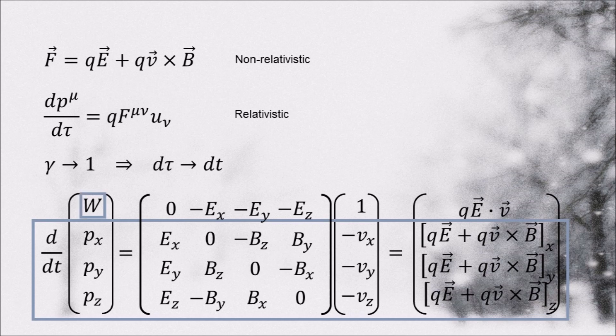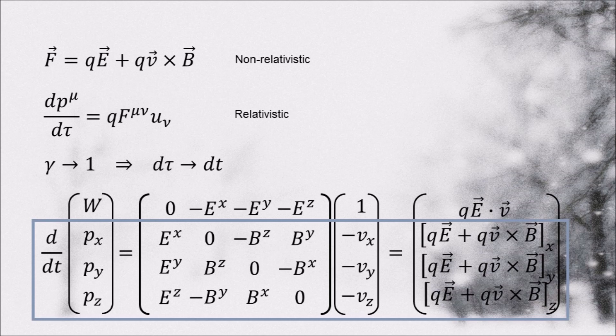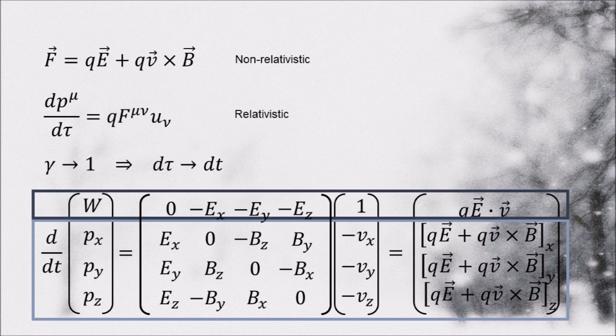I use the letter W for energy, since capital E has already been taken by the electric field. We get an extra equation by making everything four-dimensional, but since in this limit, space and time are decoupled, the bottom three equations are completely independent of the top equation.